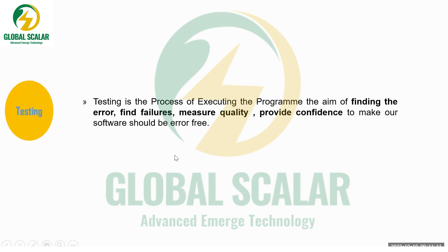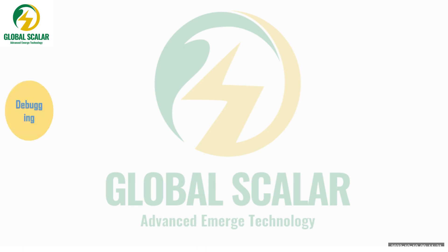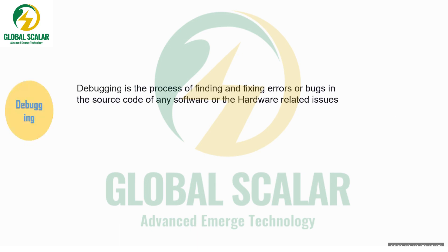Development is where we implement new features and design new features — that is part of the development activity. Debugging is the process of finding and fixing errors. Within the software, you identify the problems and solve them within time — that is part of debugging.